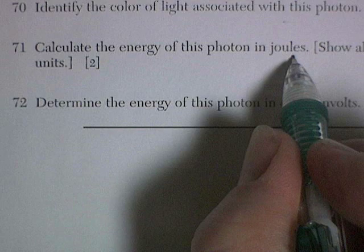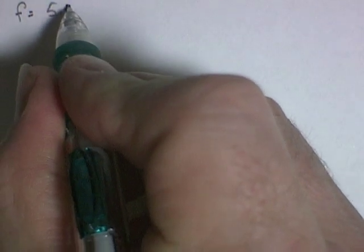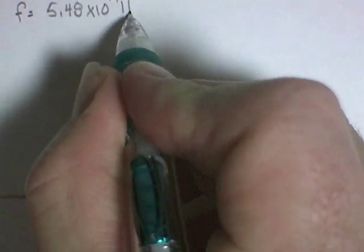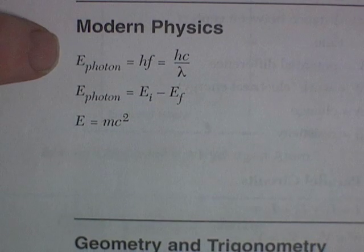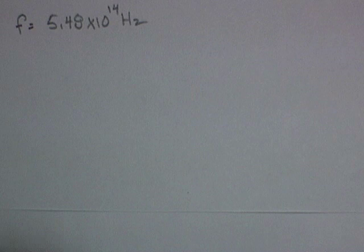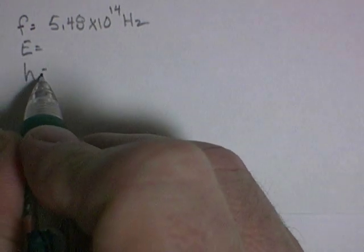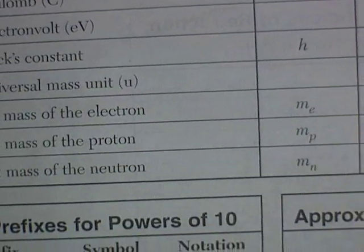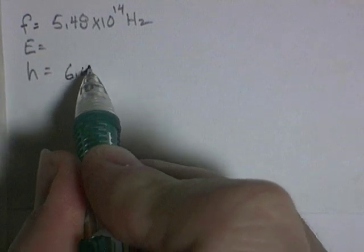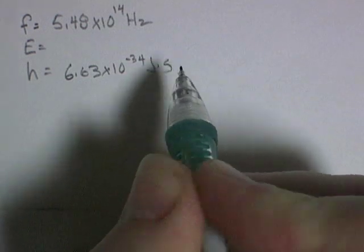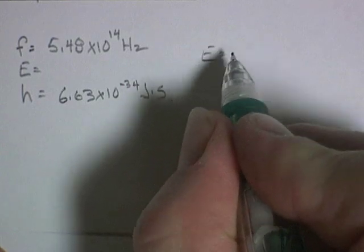We want to calculate the energy of the photon in joules. Show work, equation, substitution with units for two points. So what do we know? We know the frequency is equal to 5.48 times 10 to the 14 hertz. We know from our formula sheet, and now we're in modern physics, the energy of a photon is hf. So we're looking for the energy. And we can look up h, that's Planck's constant. Planck's constant turns out to be 6.63 times 10 to the negative 34 joule seconds. And then we do the equation, energy is equal to hf.